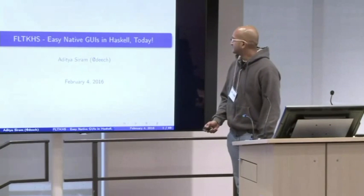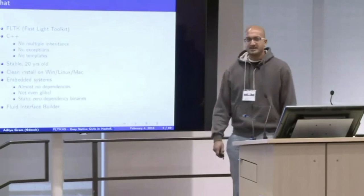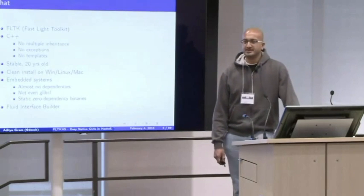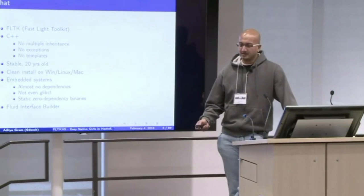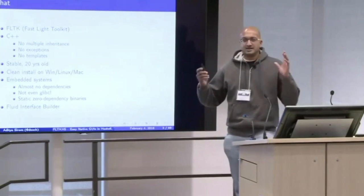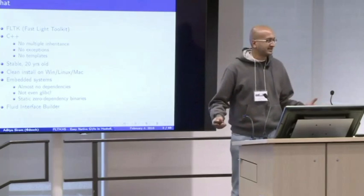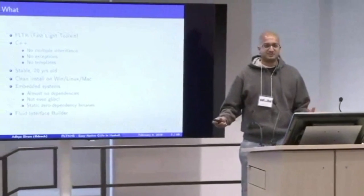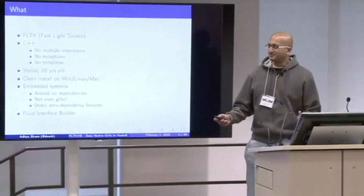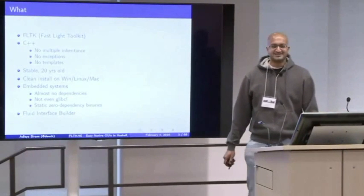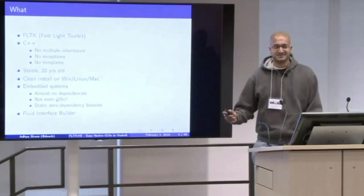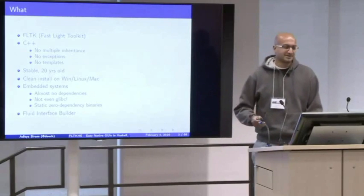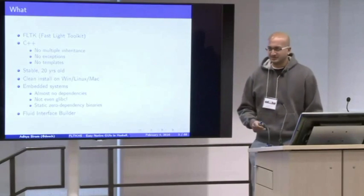So this is a binding to the FLTK GUI toolkit, and it's a binding in Haskell. The idea is to allow you to write native GUIs in Haskell. To those of you who are not in the Haskell community, it might surprise you to know that this is as yet an unsolved problem for some reason. This is just one more approach. I'm not saying I solved it. There's certainly problems here, but there's some reasons why you might want to use it.